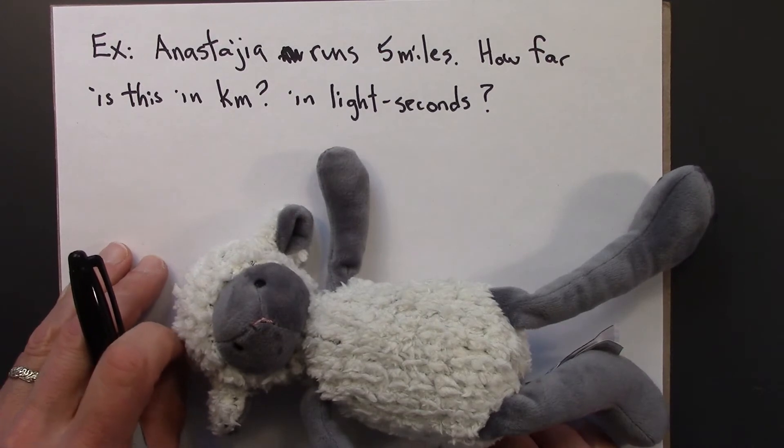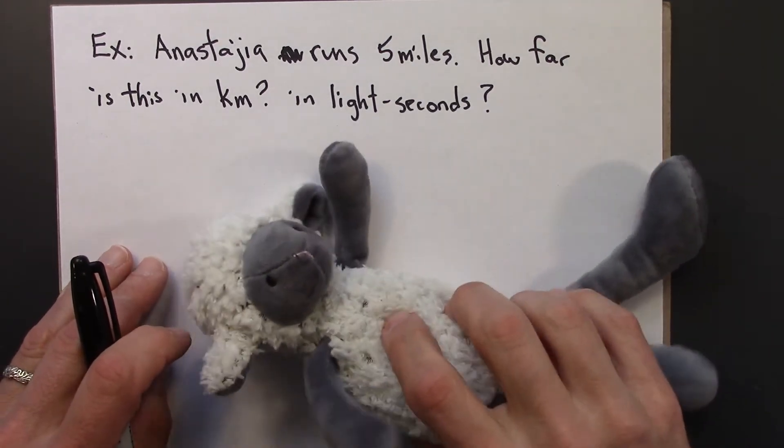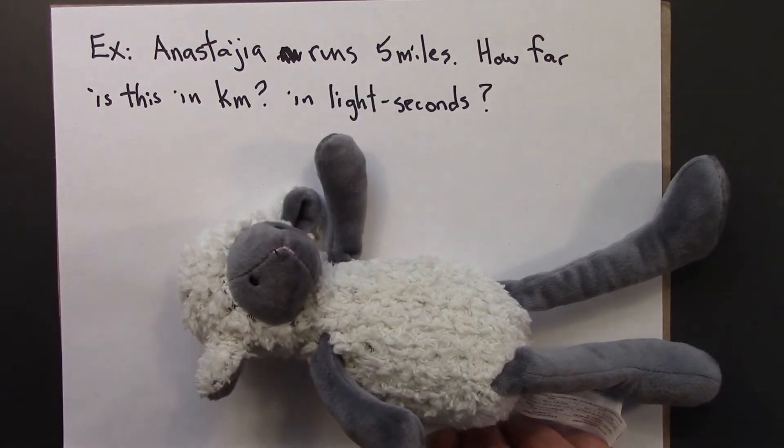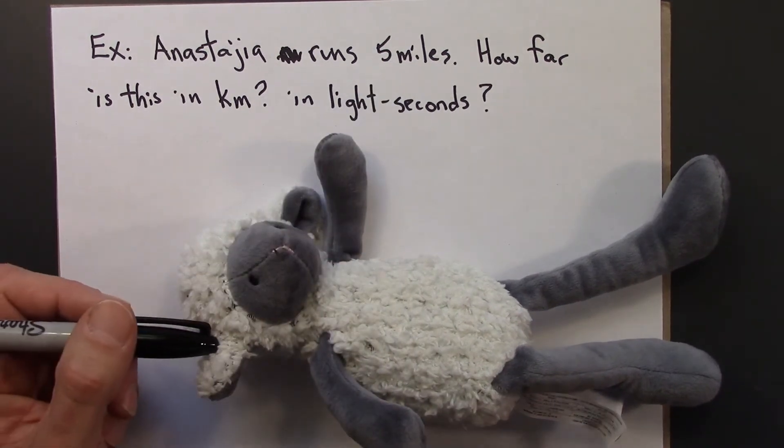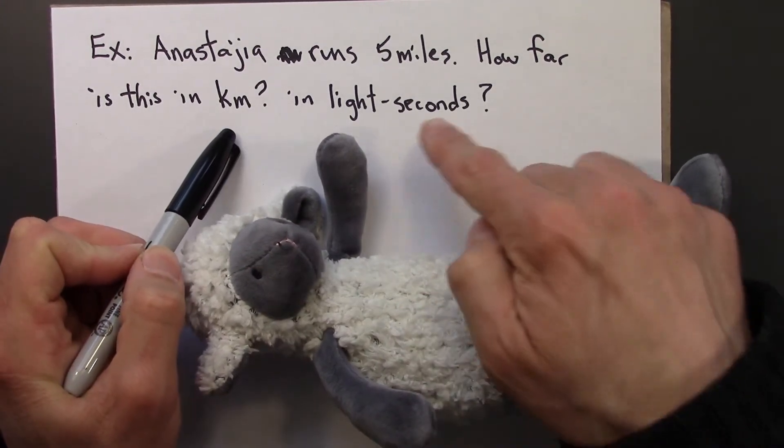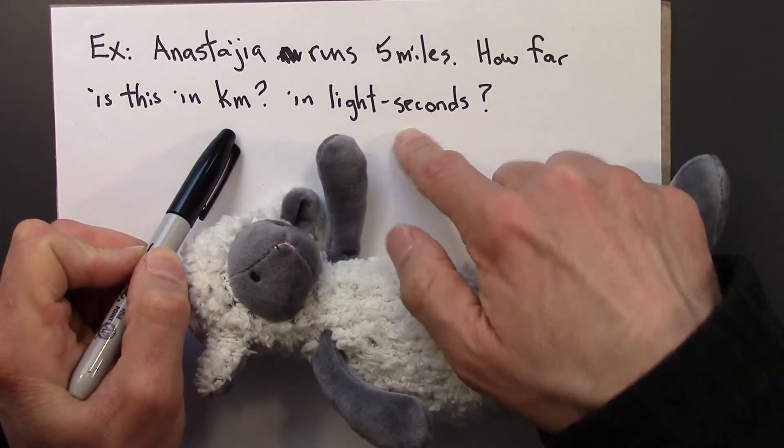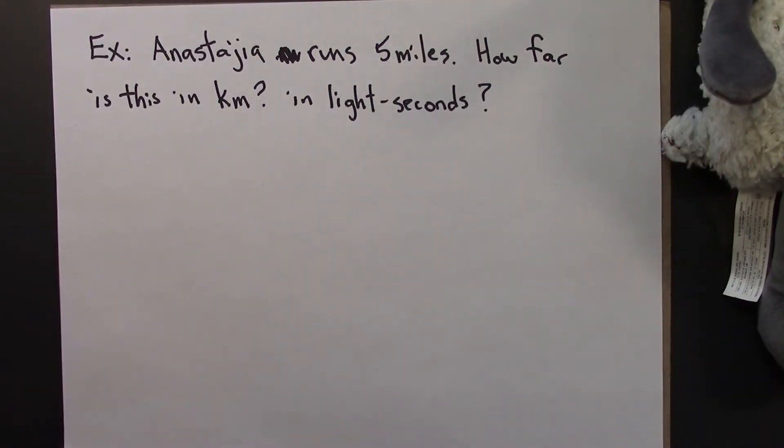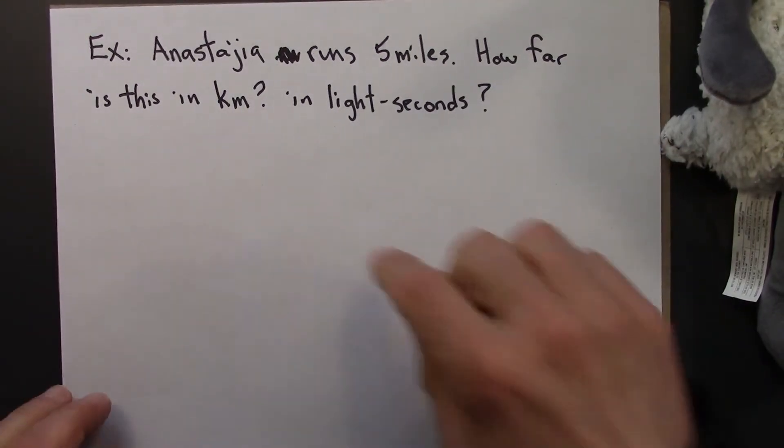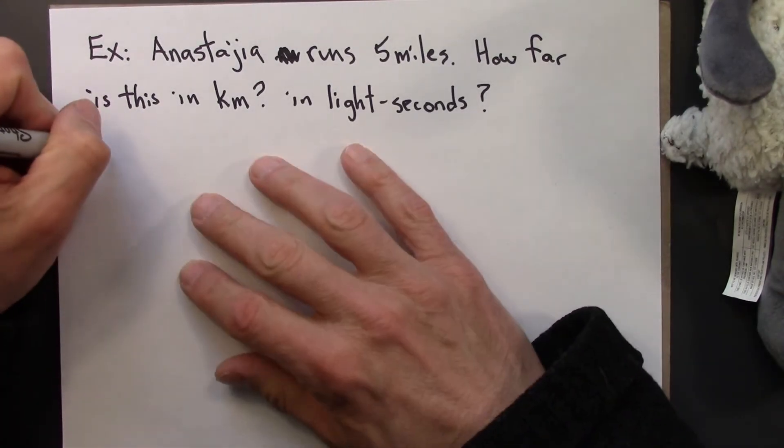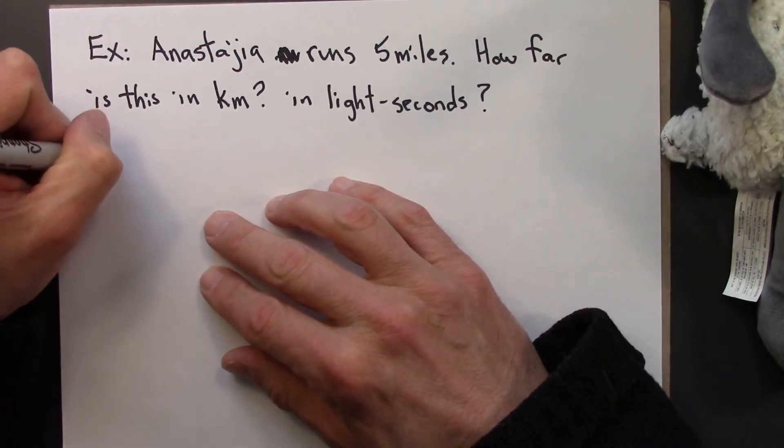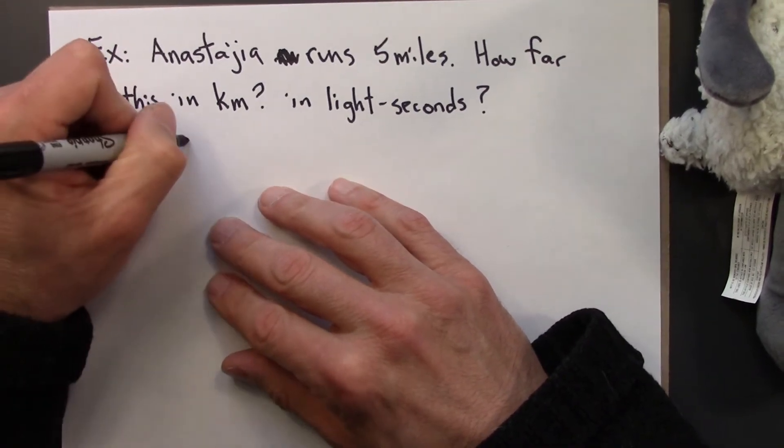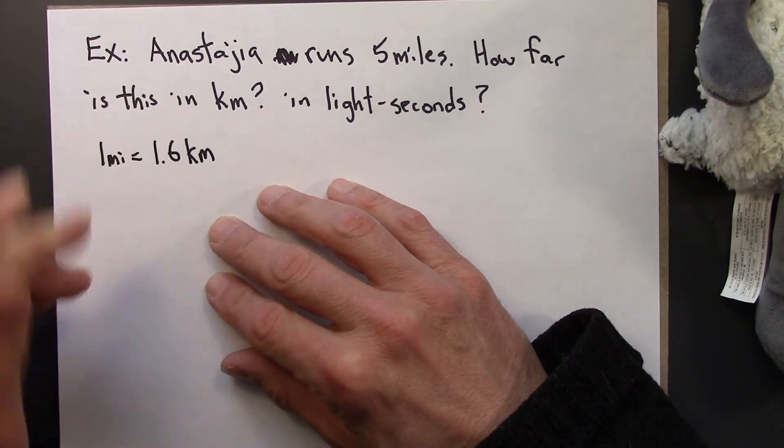So let's do an example. Suppose that Anastasia runs 5 miles. Let's convert that length, that distance, 5 miles, into first kilometers and then into light seconds. Okay. So, conversion factor for miles to kilometers is that one mile is about 1.6 kilometers.